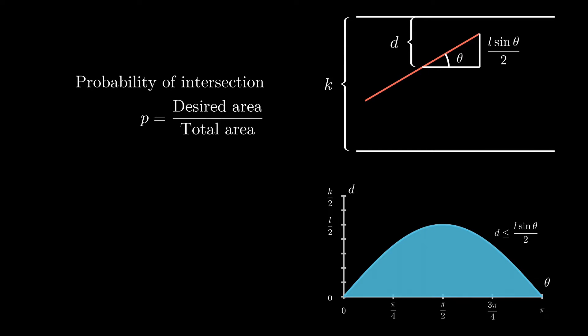The desired area is, as we said earlier, the area under the curve. Integrating l sin theta over 2 from 0 to pi gives us l. The total area is the area of all possibilities. Since d ranges from 0 to k over 2 and theta ranges from 0 to pi, the total area is k pi over 2.